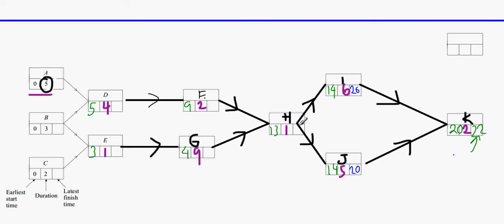H goes into both I and J, so we subtract: twenty minus six is fourteen, twenty minus five is fifteen. This time we write the smallest number, which is fourteen. Fourteen minus one is thirteen, so we write that. Thirteen minus two is eleven, thirteen minus nine is four. Then eleven minus four is seven. Four minus one is three — since we keep the smallest number, we write three. That completes the latest finish time algorithm.